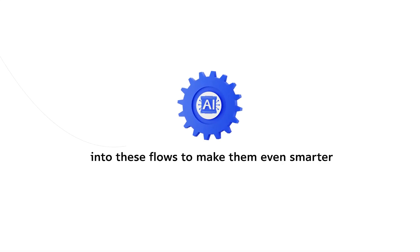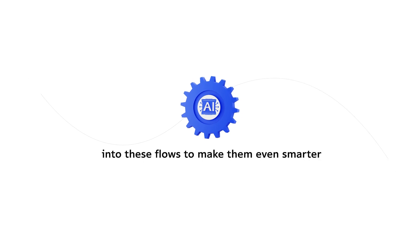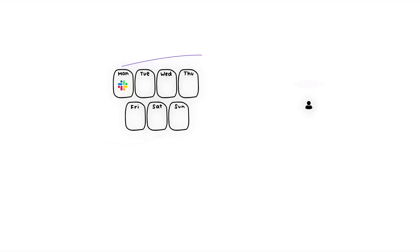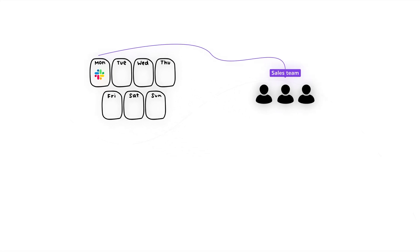And the fun part — you can incorporate AI into these flows to make them even smarter. Today, we're going to show you how to build your very first automated workflow using ActivePieces. In this example, we'll create a flow that sends a Slack reminder every Monday to the sales team with a checklist of items to prepare or review for their weekly meeting.